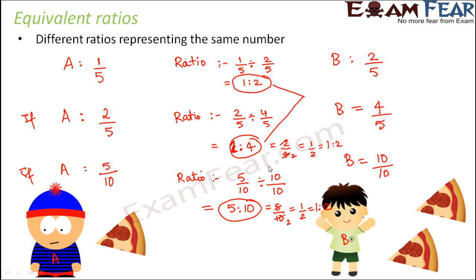2 is to 4, 5 is to 10—these are all examples of equivalent ratios. So these ratios are equivalent to each other because they represent the same ratio.